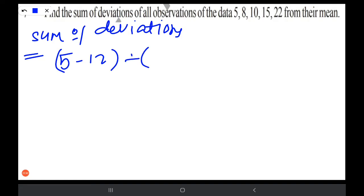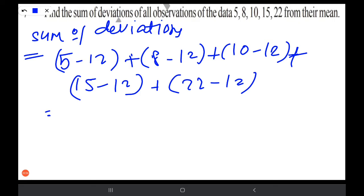Sum of deviations equals 5 minus 12 plus 8 minus 12 plus 10 minus 12 plus 15 minus 12 plus 22 minus 12. That is minus 7 plus minus 4 plus minus 2 plus 3 plus 10.